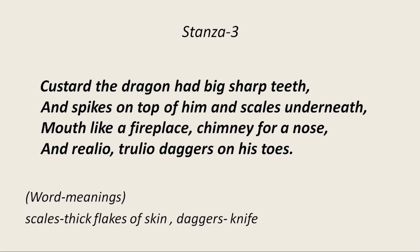Custard the dragon had big sharp teeth, and spikes on top of him, and scales underneath. He had sharp spike shapes on his head, as you must have seen in pictures of a dragon, and scales underneath — thick flakes of skin under his feet just to protect them. His mouth was like a fireplace: when he was angry, fire came out from his mouth. His nose was like a chimney, and he had trulio trulio daggers on his toes — his toes were so sharp the poet compares them with daggers, meaning knives. But this dragon wasn't fierce; he was very calm, composed, and peaceful.